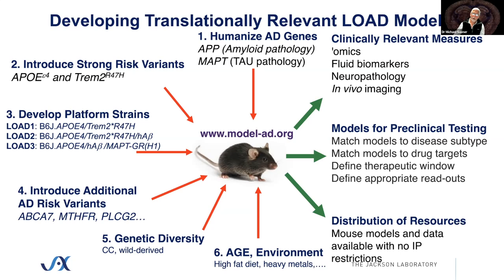Obviously we're harvesting mice at 12 and 24 months and comparing to clinical samples, which are literally terminal stage — generally 80 or 90 year old people. So we would not expect the transcriptomic analysis in the mouse to exactly match human at those ages, but we're happy that we can see the correlations we have. Those clinically relevant measures will then be used for preclinical testing: to match models of disease subtype to the right drug, define the therapeutic window, and define the appropriate readouts.